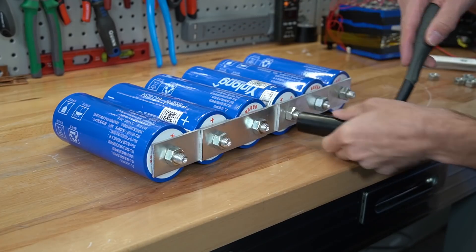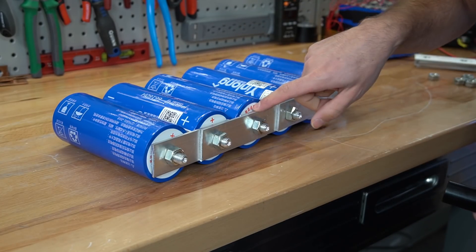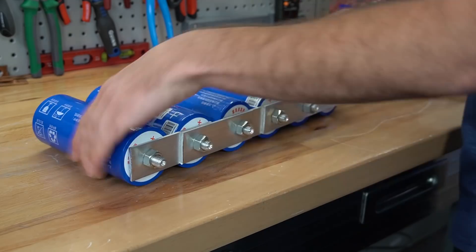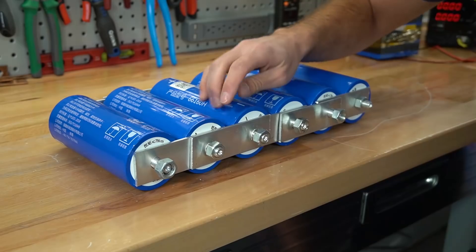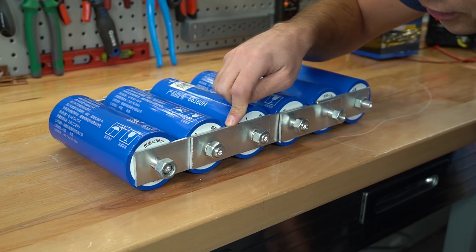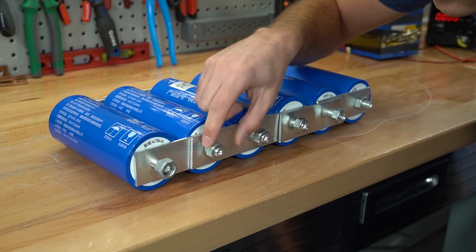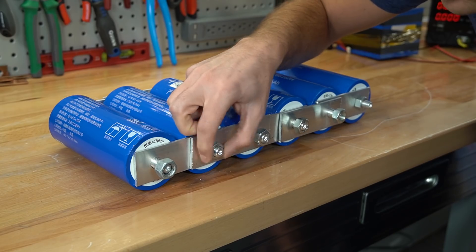You do not want to over tighten these. There is a torque spec on each cell so be very careful. And not only did these cells not come with bus bars but they did not come with these nuts. So these are actually from my old grade B pack.